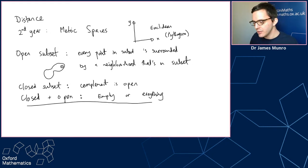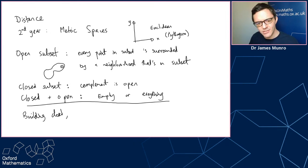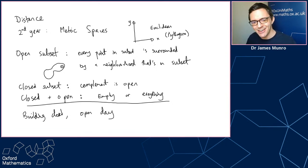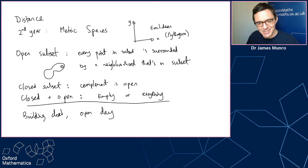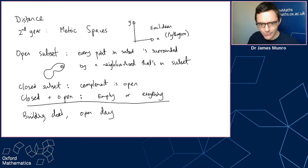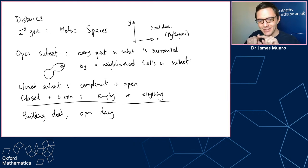Why am I telling you this? Well, our building is currently closed, but somehow even though our building's closed we're still doing an open day. So we're doing something that's open and closed at the same time. This shows that if you're going to be open and closed then it's all or nothing - we've got to give you everything or nothing. Just to be clear: everything above the line is actual mathematics from second year, everything below the line is a joke, and we are online.